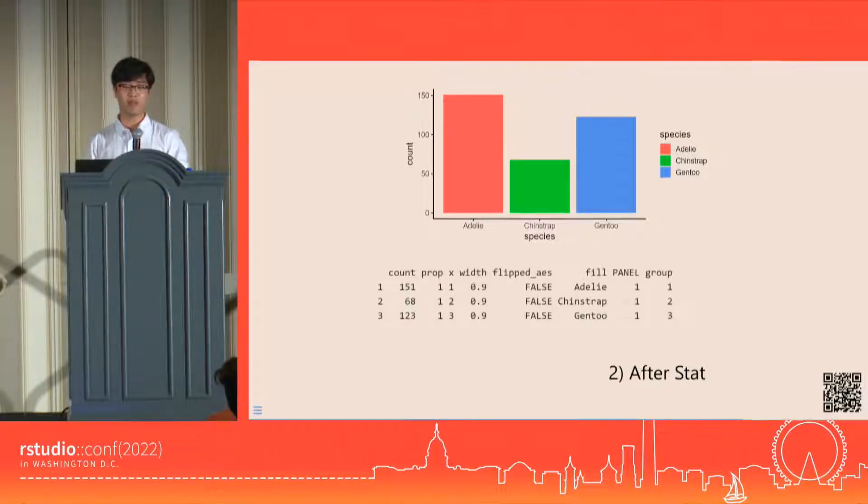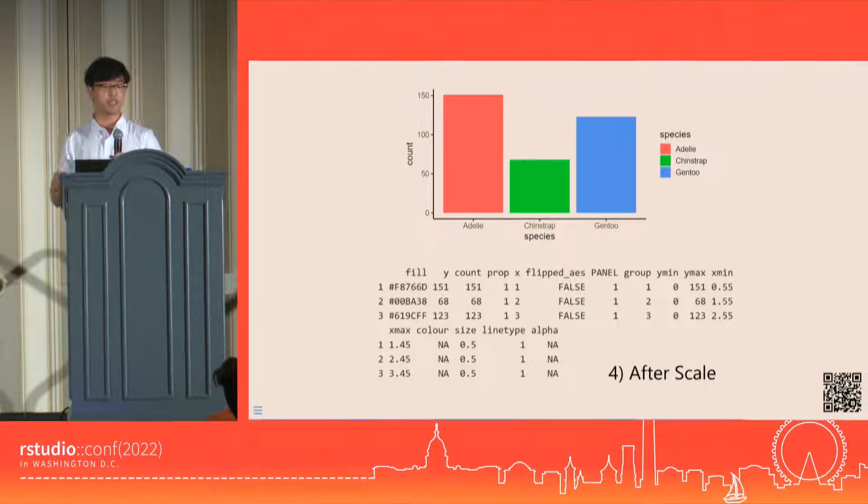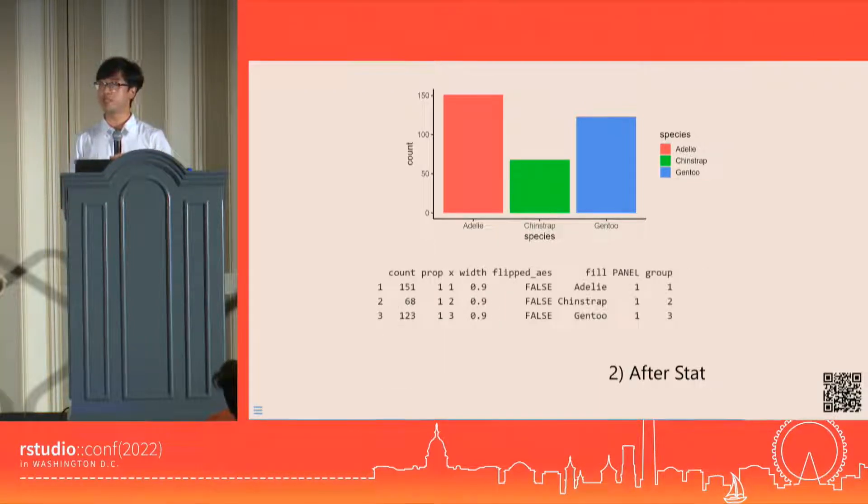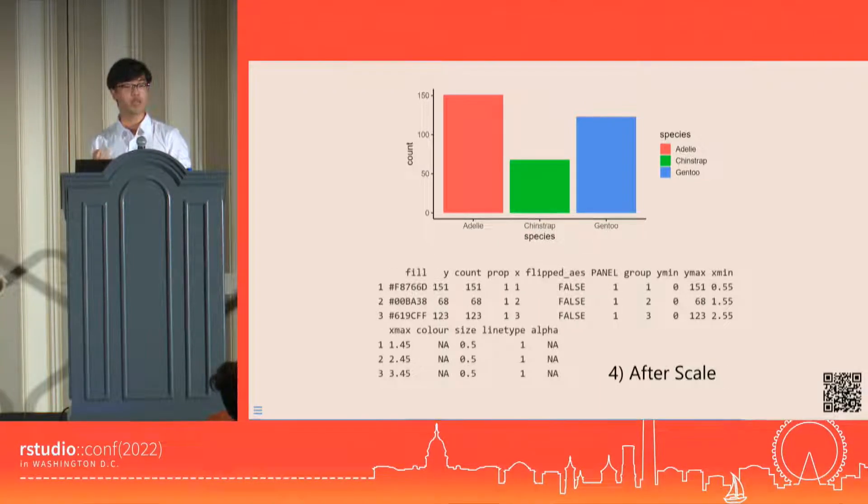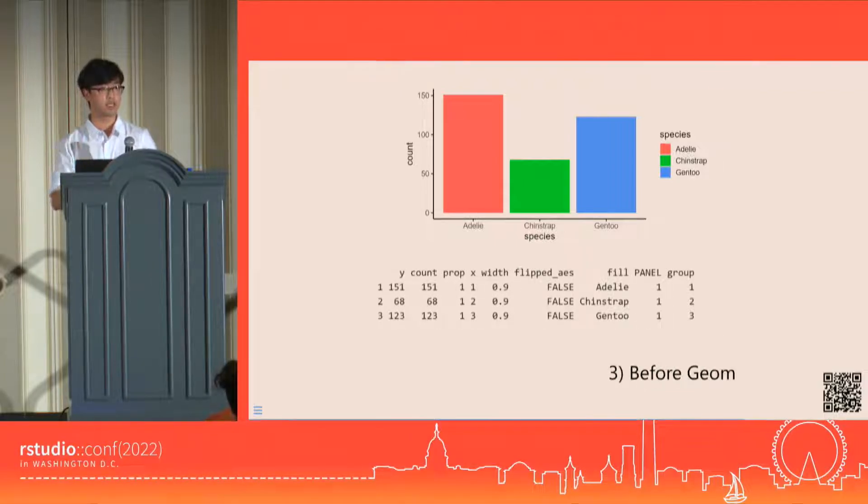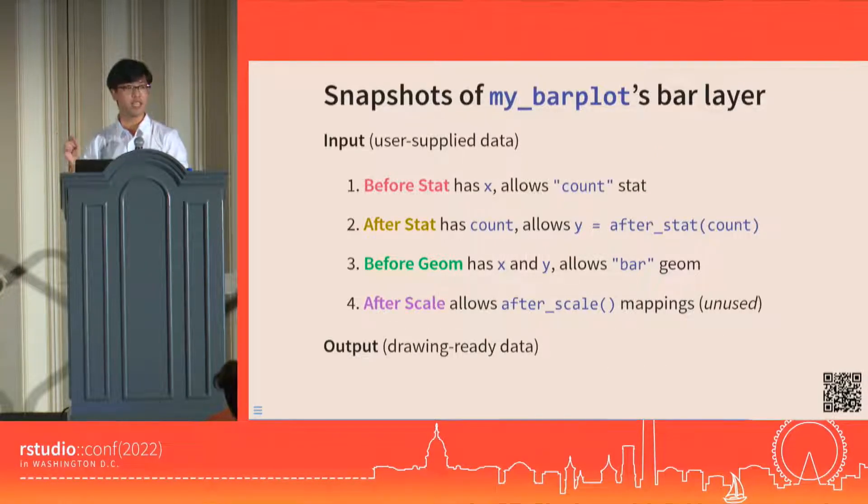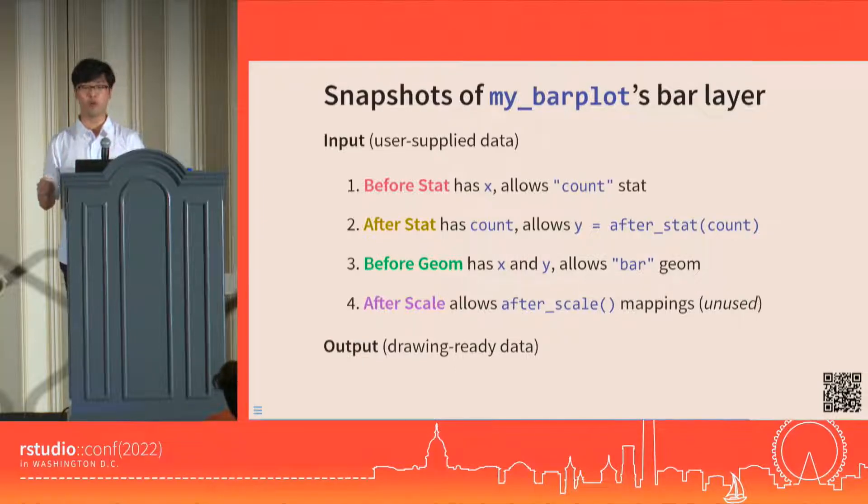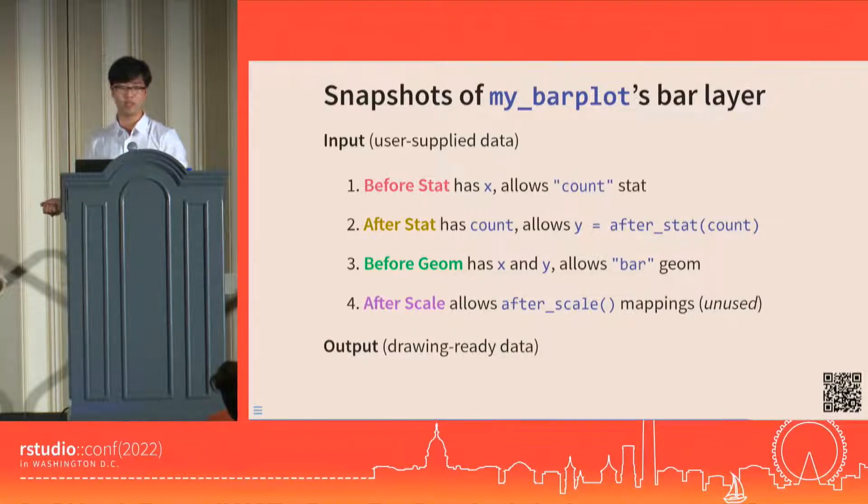That concludes our bar plot walkthrough. To recap, a layer's data becomes drawing-ready in steps in the internals. Using the inspect functions from ggtrace, we were able to see what the data looks like at certain steps, and crucially, how the state of the layer's data can inform what kind of layer code that we can write. With that, we circle back to our boxplot annotation layer.